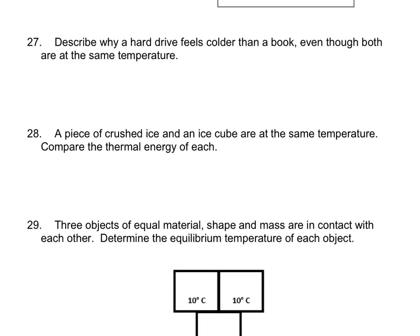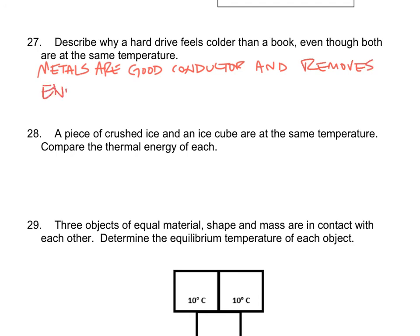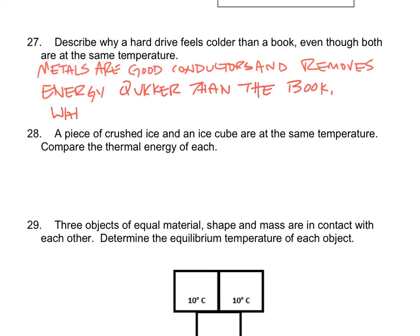Number 27: why does a hard drive feel colder than a book even though both are at the same temperature? The hard drive is made of metal, and metals are good conductors — they transfer energy very rapidly. So when you touch the hard drive, it removes energy from your hand more quickly than the book does. The book, made of paper, is more of an insulator than a conductor, so it feels warmer by comparison.